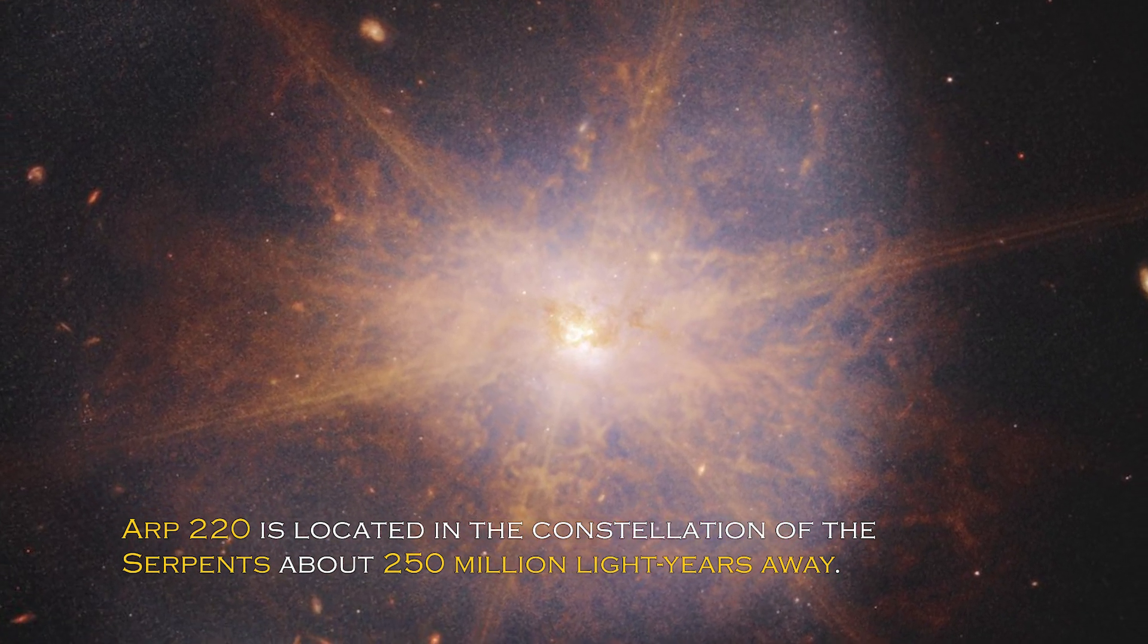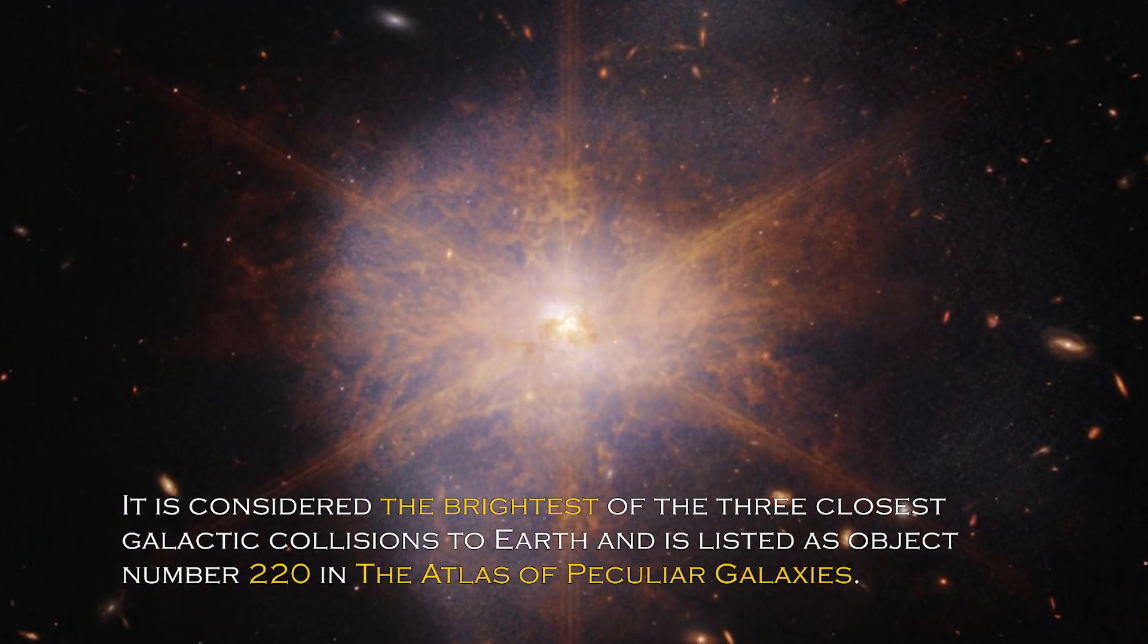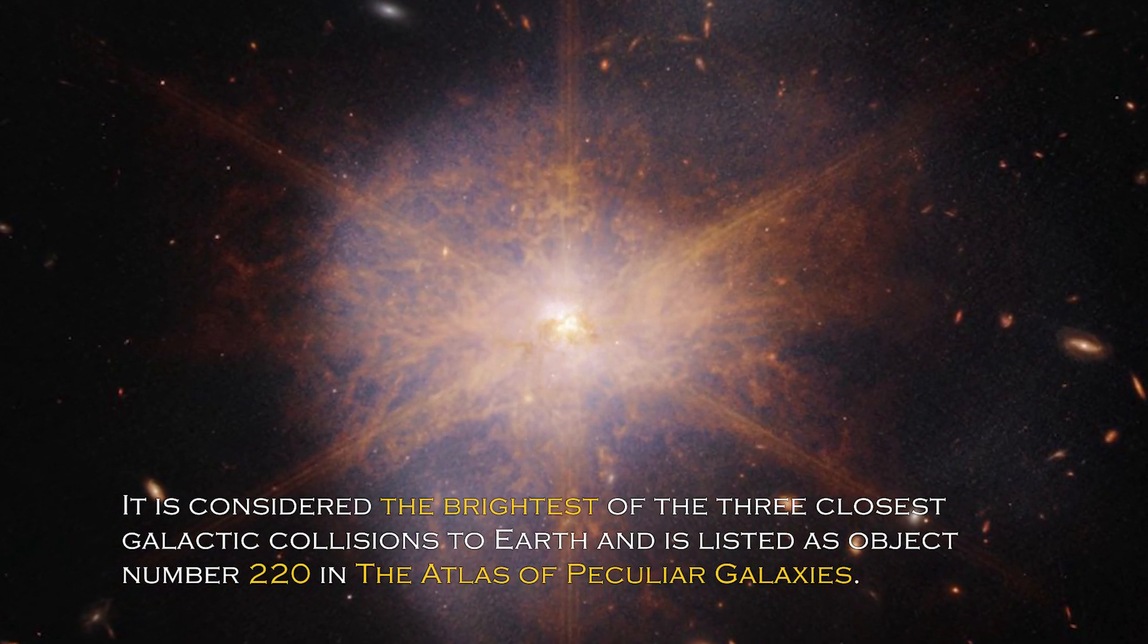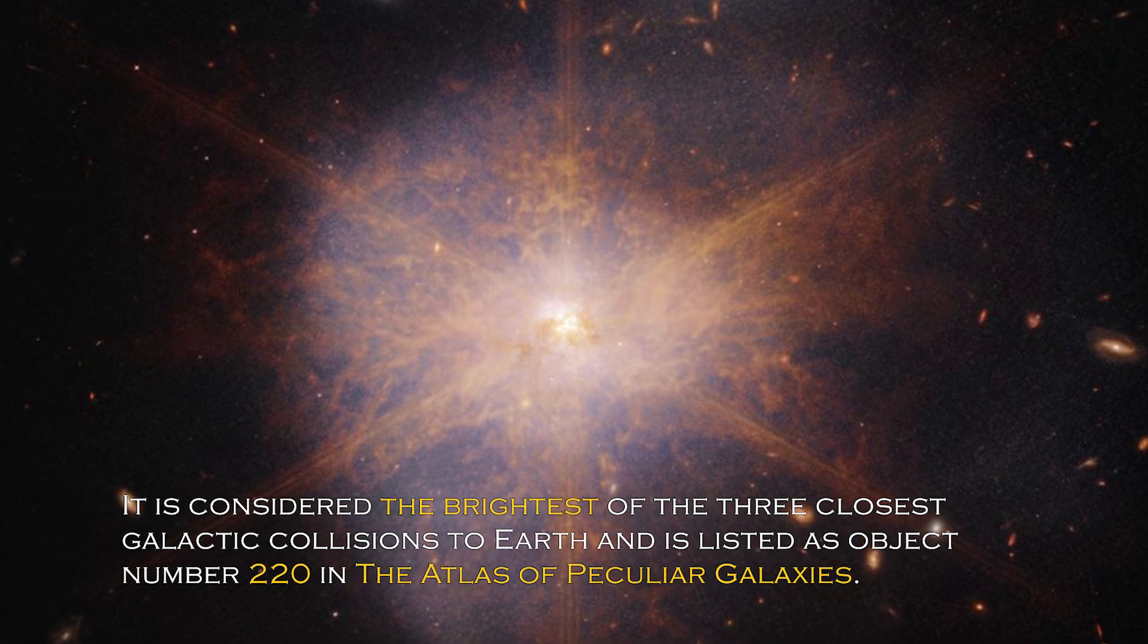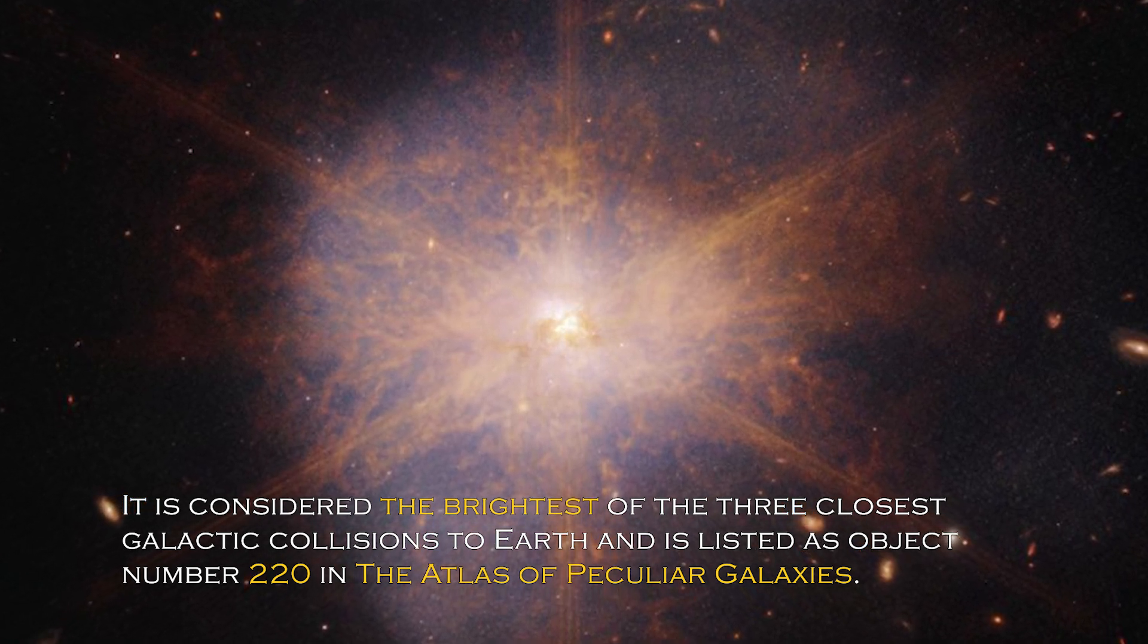ARP 220 is located in the constellation Serpens, about 250 million light-years away. It is considered the brightest of the three closest galactic collisions to Earth and is listed as object number 220 in the Atlas of Peculiar Galaxies.